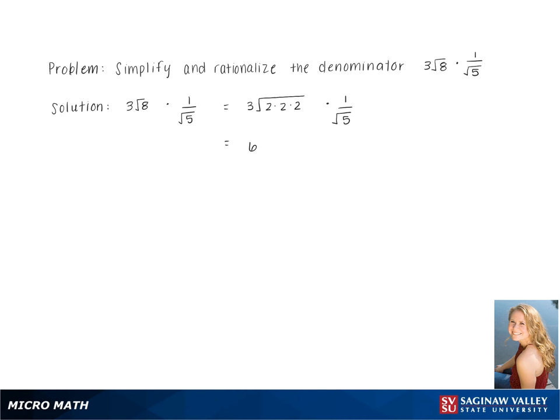Pulling out a pair of 2's gives us 6 square root 2 times 1 over square root 5. We then can combine these terms through multiplication, giving us 6 square root 2 over the square root of 5.